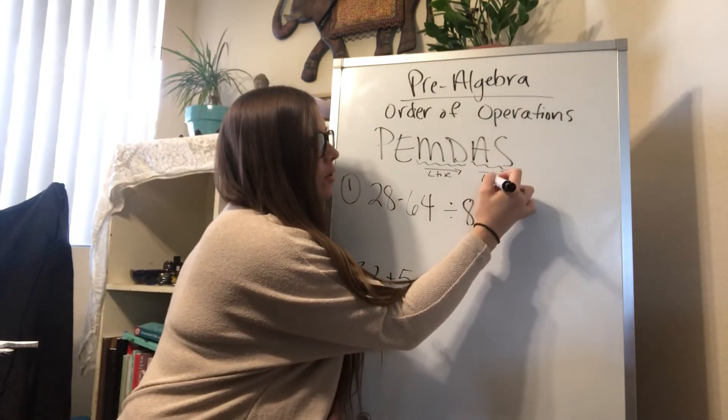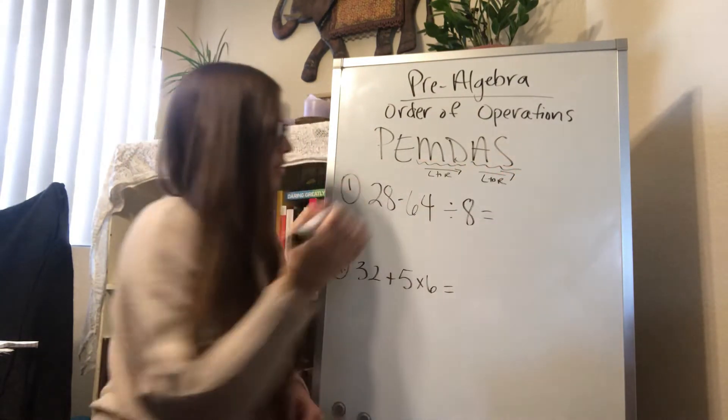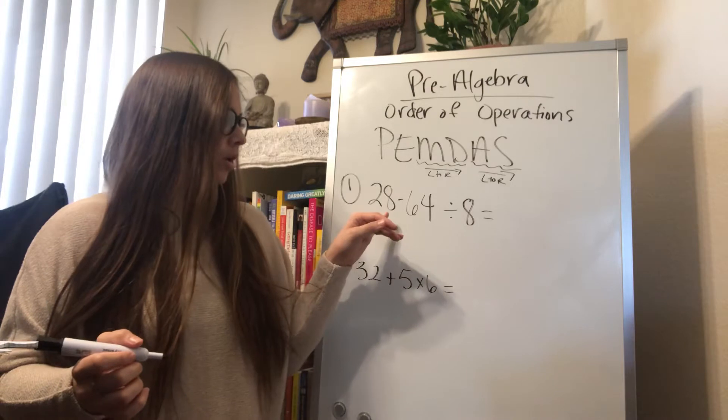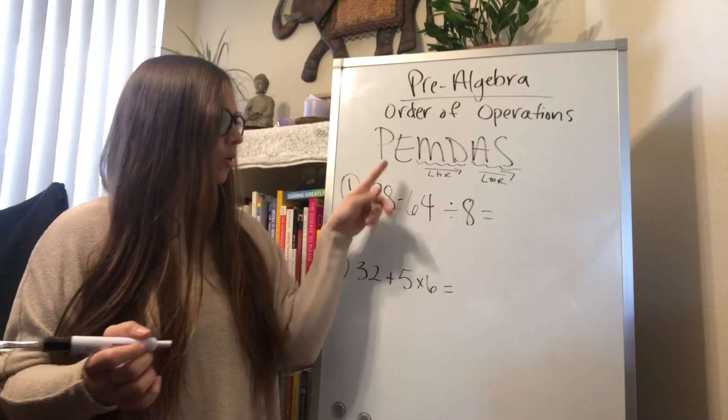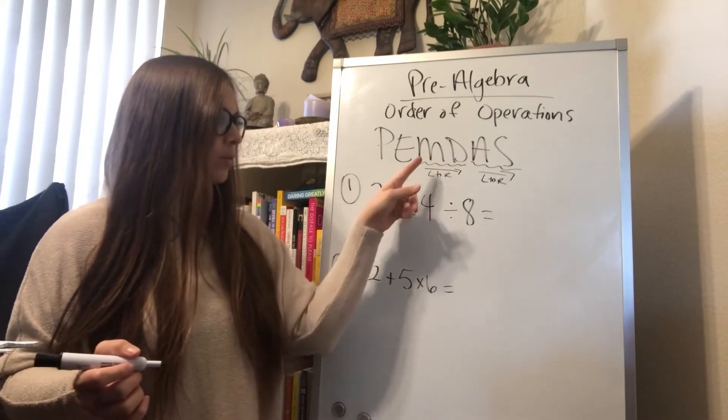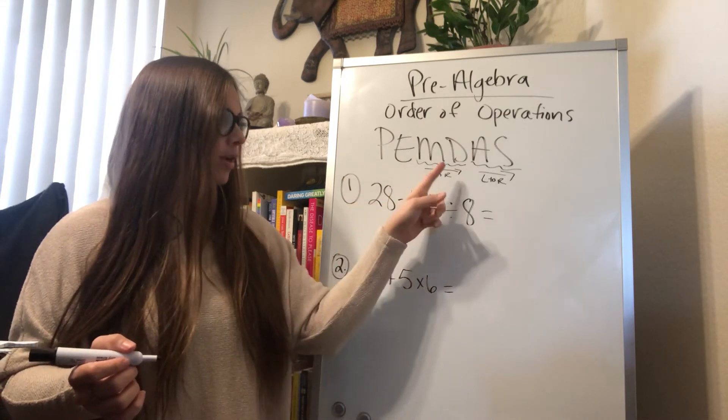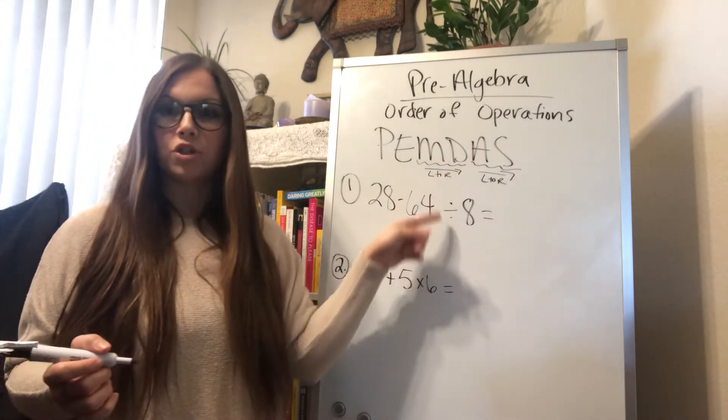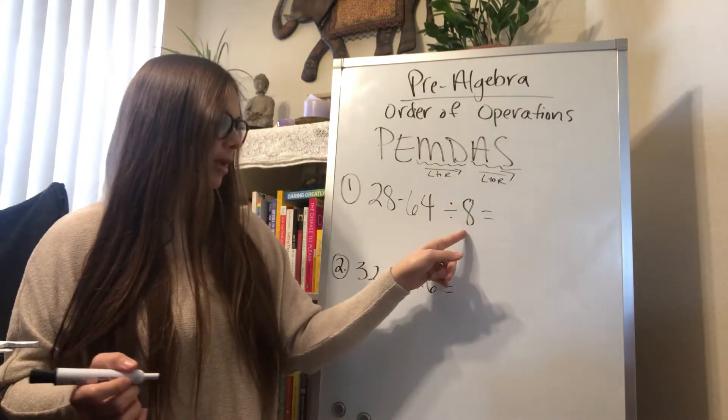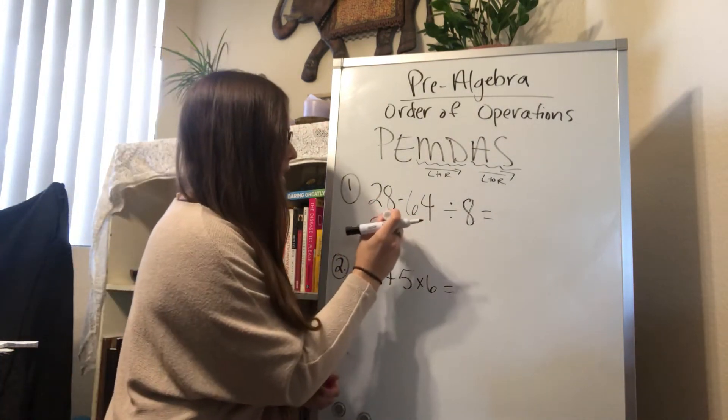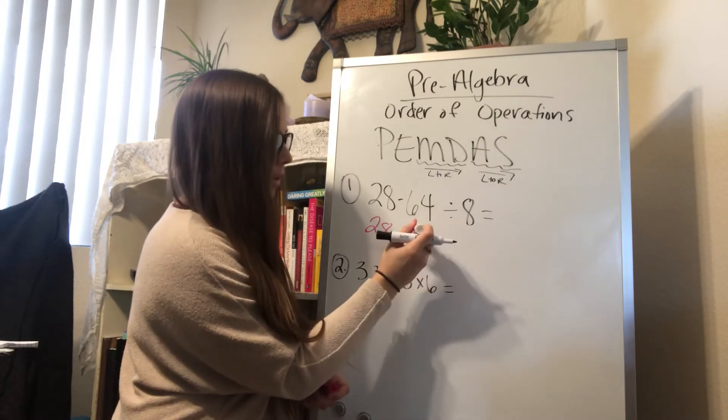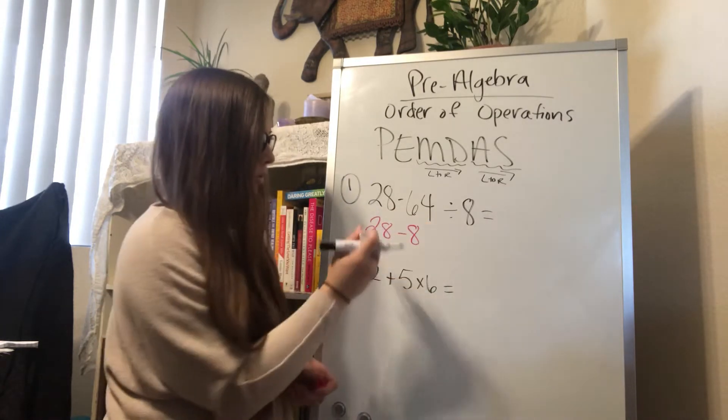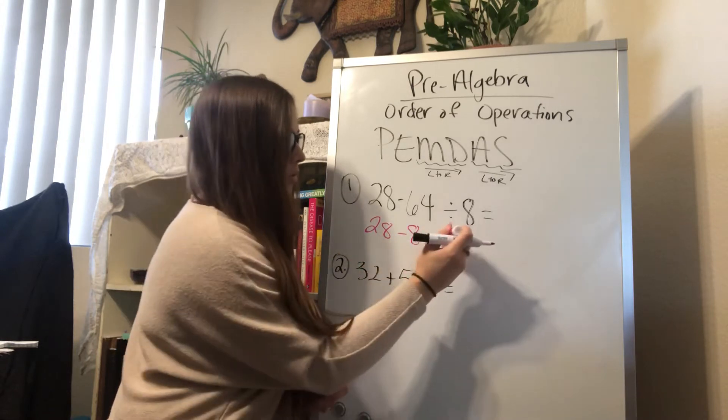So here we don't have any parentheses. We don't have any exponents. Do we have multiplication? No, we have division. Yes, so we start with division. So we'll start with 64 divided by 8. So bring down our 28, and then negative 64 divided by 8 is negative 8, so 28 minus 8 equals 20.